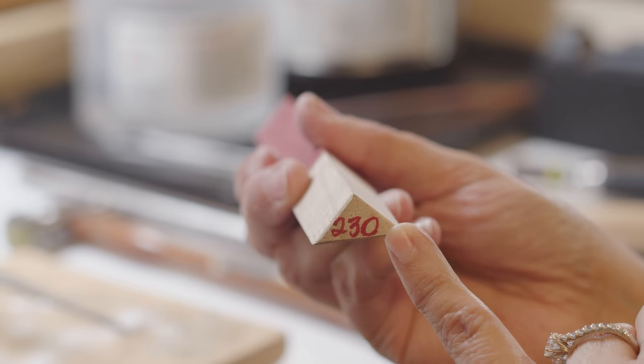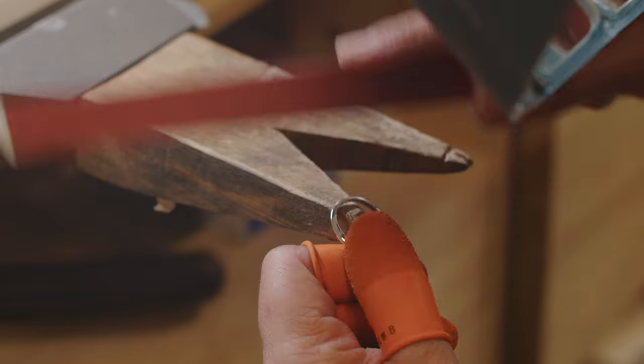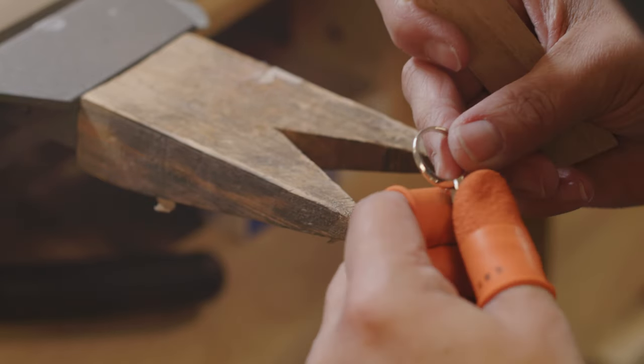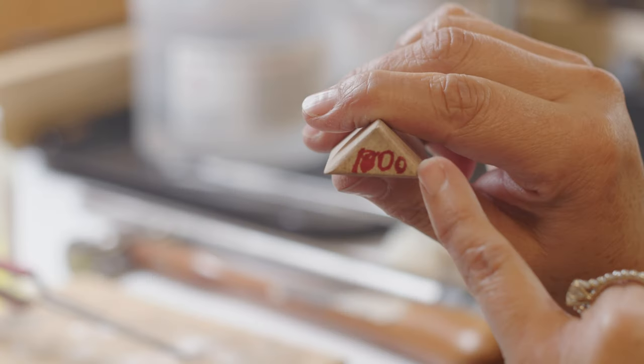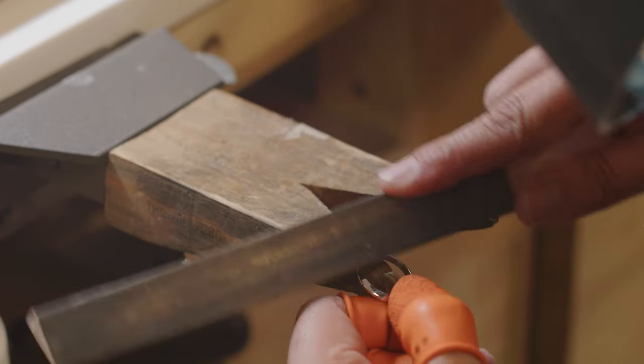230 grit. It's going to smooth the metal a lot quicker, just a couple passes. Now we're going to go with a higher grit for a smoother finish.